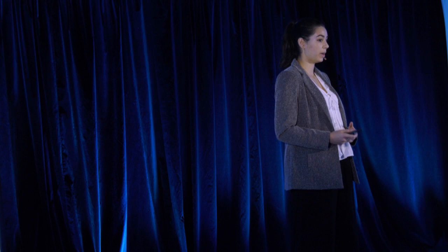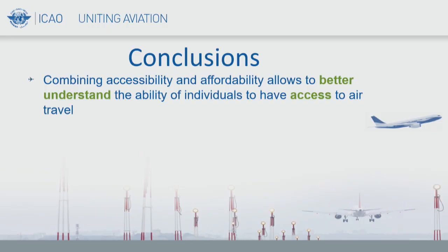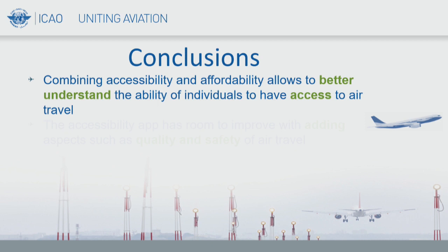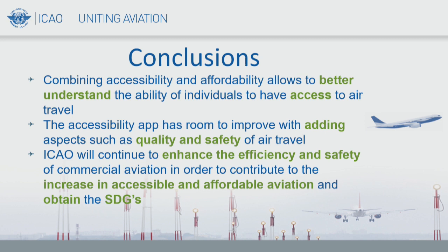In conclusion, combining accessibility and affordability really shows us the whole picture of air transport and who is truly able to use it. For our current iSTARS app, we've started improving it by adding affordability, and we can continue by incorporating safety and quality to build the complete picture — building all sides of the dice. ICAO will continue to enhance the efficiency and safety of commercial aviation to contribute to increased accessible and affordable aviation and achieve the UN's social development goals. We are really just starting to understand who has access to air transport, and there's a lot more to do.